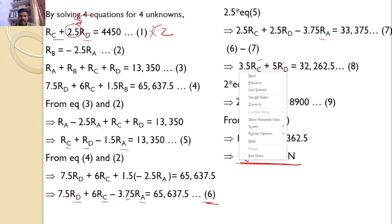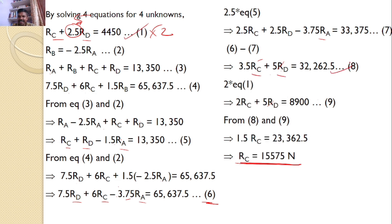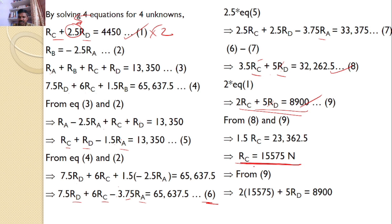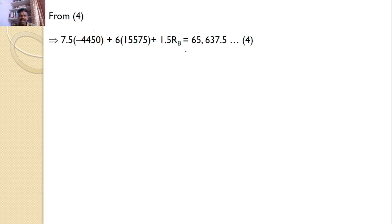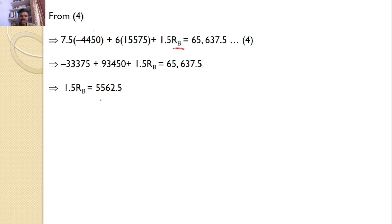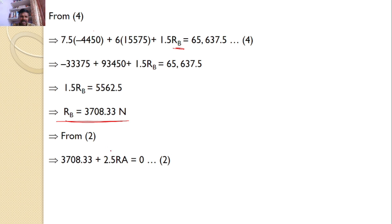Once R_C is known, substituting into Equation 9: 2 into 15,575 plus 5·R_D equals 8,900, giving R_D equals minus 4,450 newtons. Then substituting R_C and R_D into Equation 4, the only unknown is R_B, and solving gives R_B equals 3,708.33 newtons. From Equation 2, R_B plus 2.5·R_A equals zero, giving R_A equals minus 1,483.33 newtons.